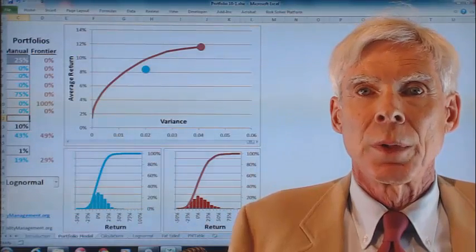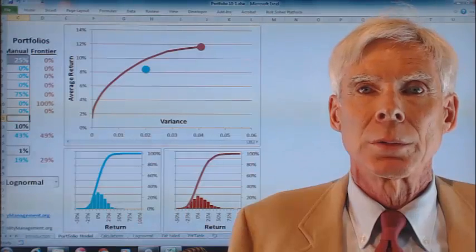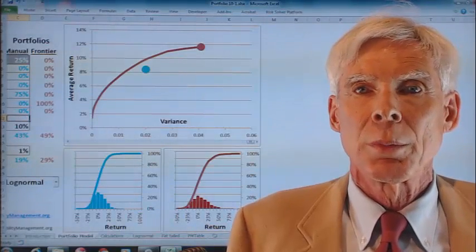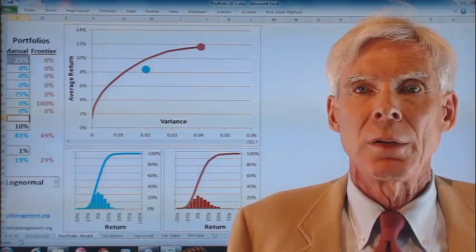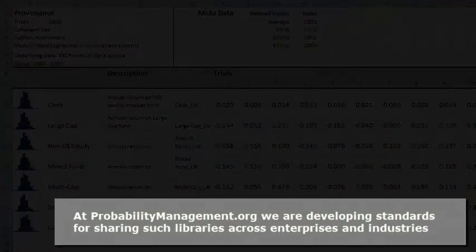This is a SIPMATH version of the risk-return model of Nobel Prize winning economist Harry Markowitz. It gave birth to modern portfolio theory in the 1950s. In this model, the returns of seven assets are stored in a library of log-normal SIPs of 1,000 trials each.